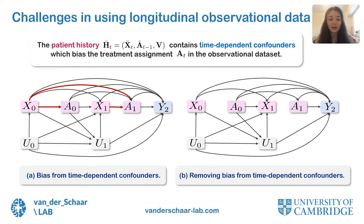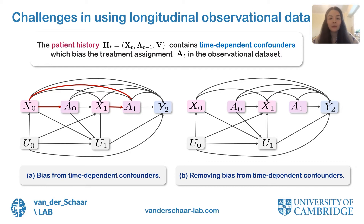Estimating the effect of a different sequence of treatments on outcome Y2 would require not only adjusting for the bias at the current time step in treatment A1, but also for the bias introduced by the previous application of treatment A0. Using standard supervised learning methods will be biased by the treatment assignment policy present in the observational data set and will not be able to generalize well to changes in the treatment policy in order to generate counterfactuals. To remove this confounding bias, we need to disentangle the causal effects of the treatments from the causal effects of the confounders.